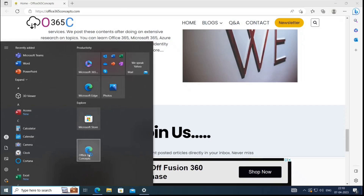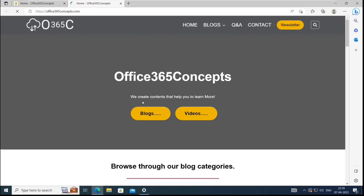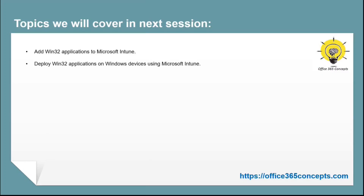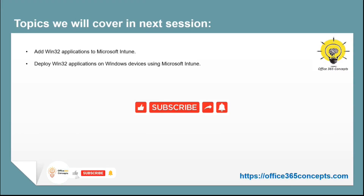Now whenever an end user clicks the Windows icon, they can see this app icon and simply click it to be redirected to the web application. In the next video we will learn how to add and deploy Win32 applications to Windows devices using Microsoft Intune. If you learned something new from this video, please write in the comments and subscribe to the channel. Thank you for your time — take care.